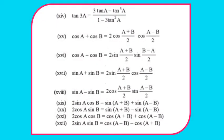tan3A = (3tanA − tan³A)/(1 − 3tan²A). Next: cosA + cosB = 2cos((A+B)/2)cos((A−B)/2). cosA − cosB = 2sin((A+B)/2)sin((B−A)/2). sinA + sinB = 2sin((A+B)/2)cos((A−B)/2). Then 2sinA cosB = sin(A+B) + sin(A−B). 2cosA sinB = sin(A+B) − sin(A−B). 2cosA cosB = cos(A+B) + cos(A−B). 2sinA sinB = cos(A−B) − cos(A+B). Pause and note down these identities.